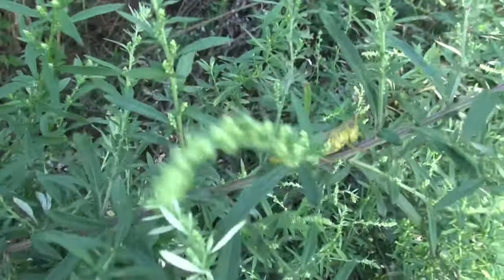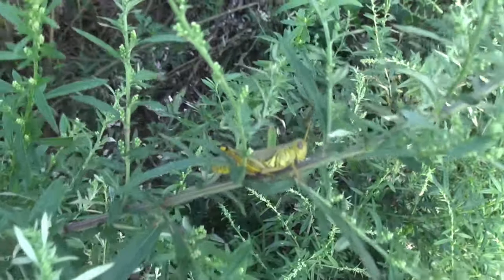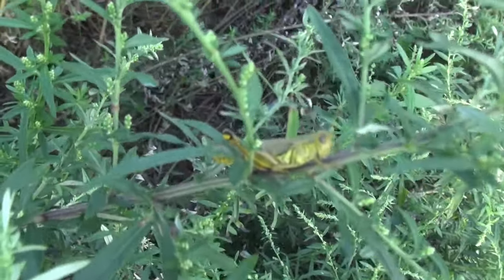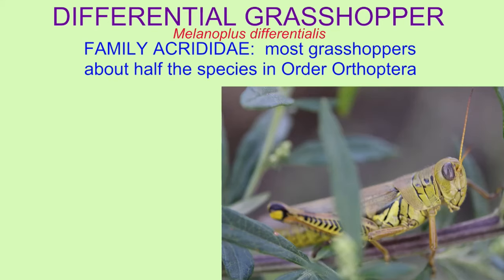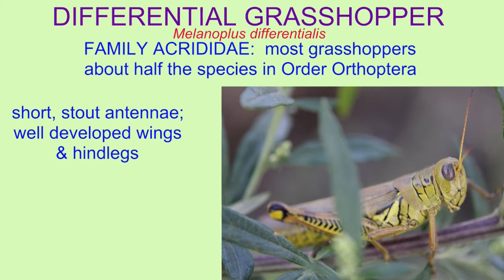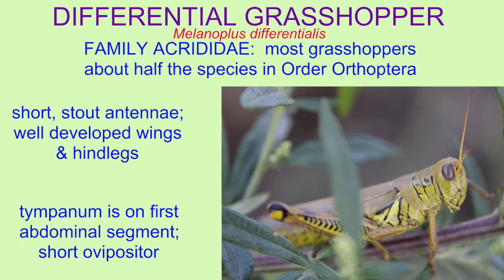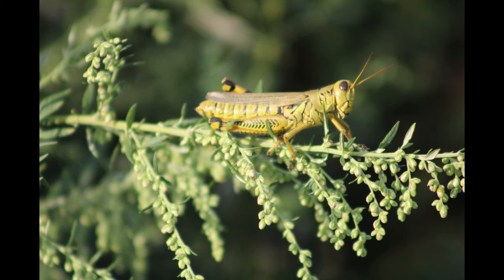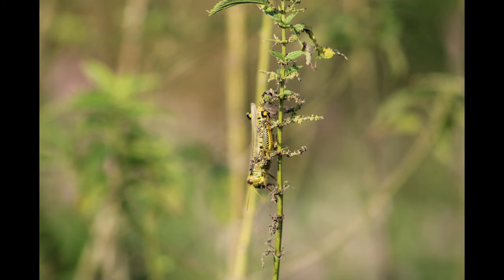Differential grasshoppers are classified in the family Acrididae, which includes most grasshoppers and about half the species in order Orthoptera. They possess short stout antennae compared to other members, and their wings are well developed compared to other grasshoppers, as are their hind legs.